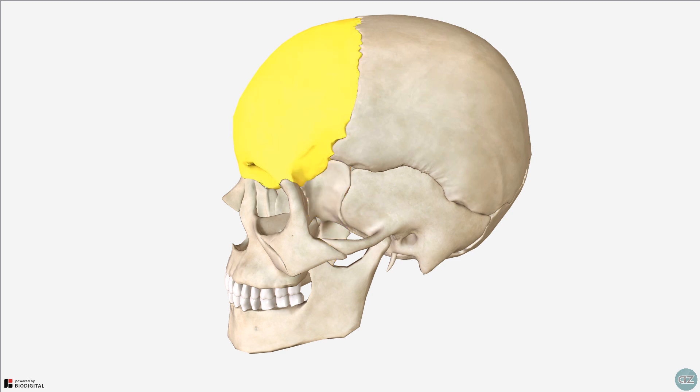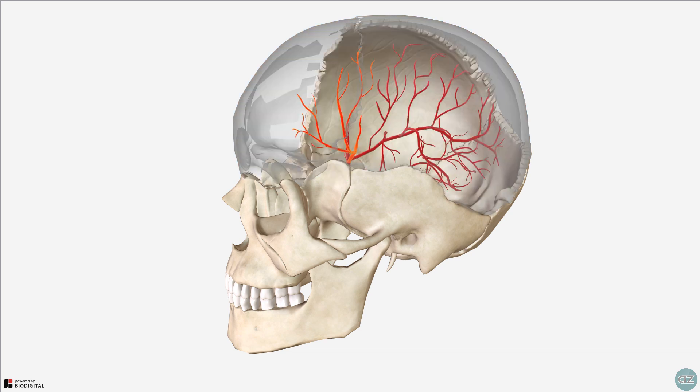This junction where the frontal, parietal, sphenoid, and temporal bones articulate is known as pterion. It's clinically very important because it's very thin and weak and can be easily fractured due to the number of articulations here. In addition, and of significant clinical importance, it overlies the anterior division of the middle meningeal artery. Fracture here can therefore damage this artery and result in an extradural hemorrhage.